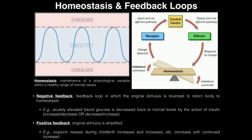The body needs to maintain any physiological variable within a healthy range of normal values. Any physiological variable, such as blood pressure or blood glucose, has to be maintained within a pretty narrow range of values. There is a lower limit and an upper limit for a healthy range, and as long as you're within that range, you're healthy.